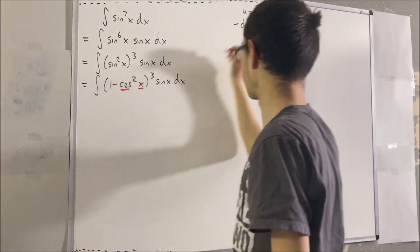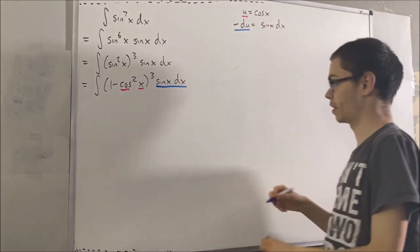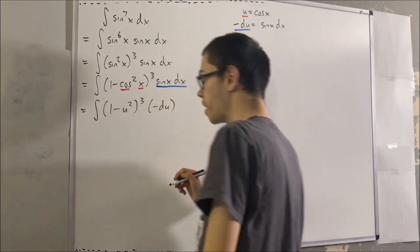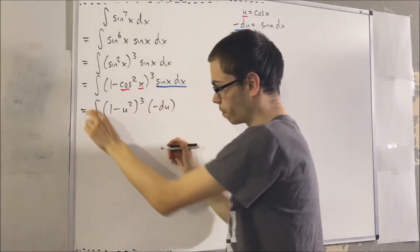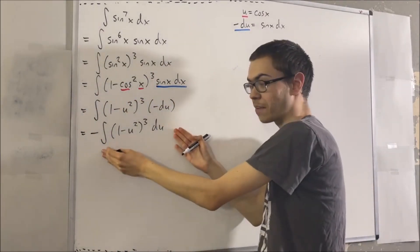We're going to replace the cosine of x with u and the sine x dx with negative du. And so this is what our integral becomes. Now we can pull the minus sign to the front of the integral. And so this is the integral that we have to evaluate.